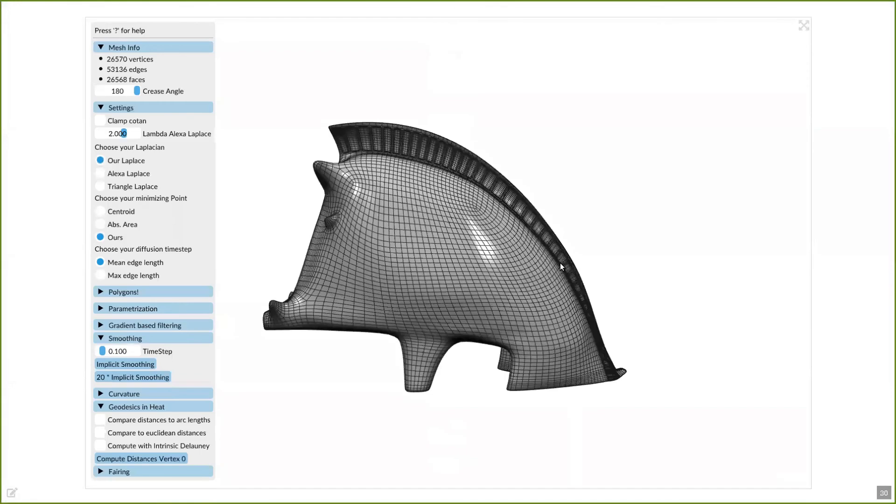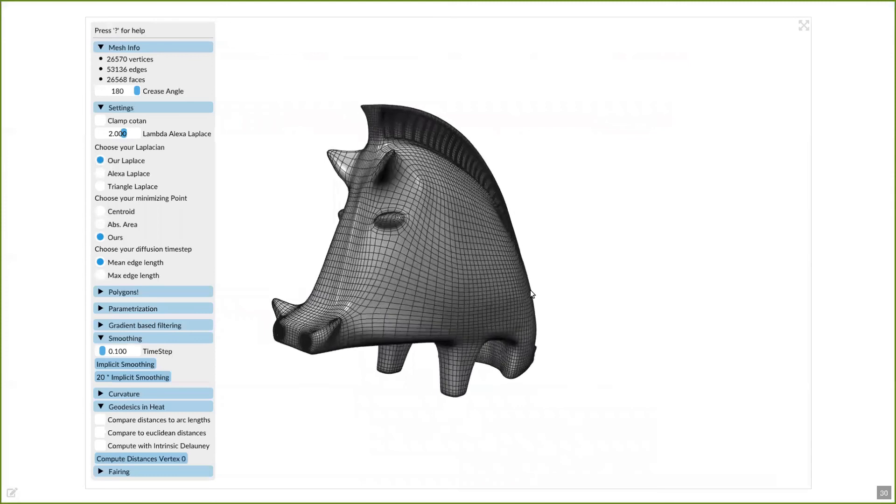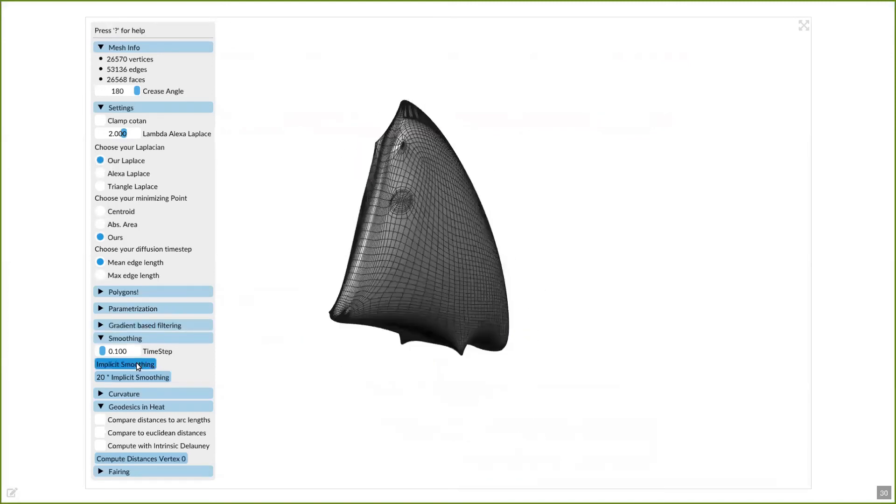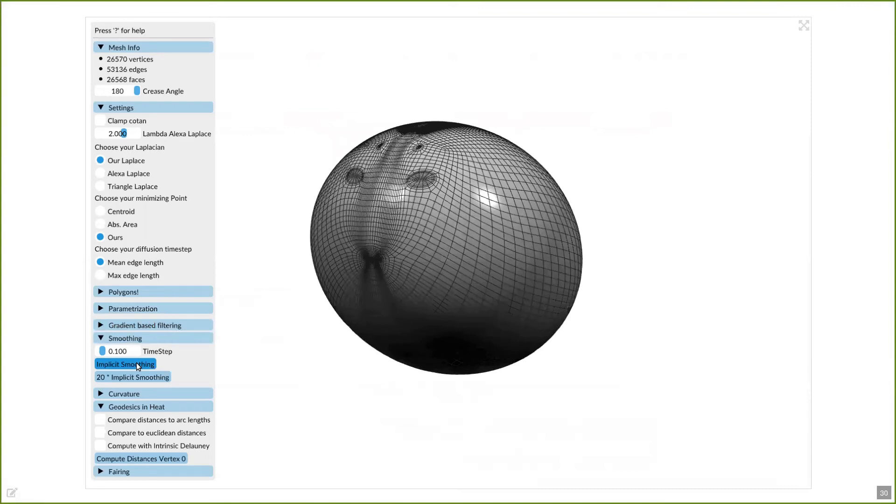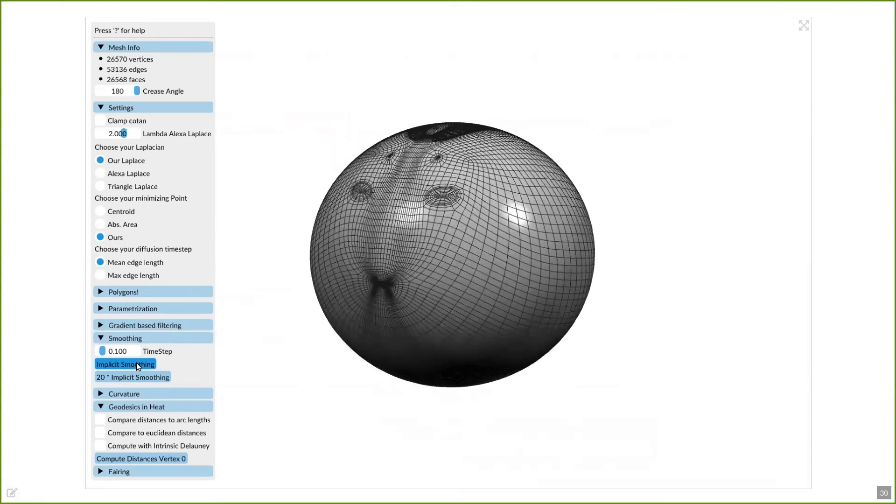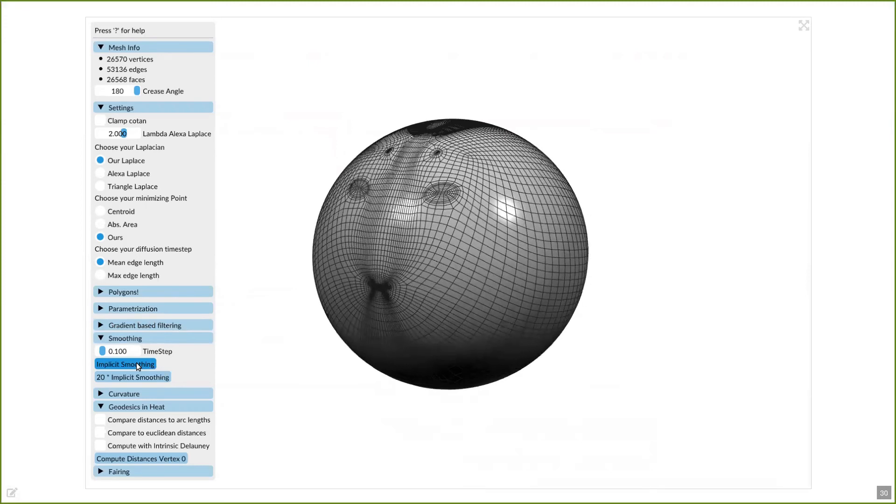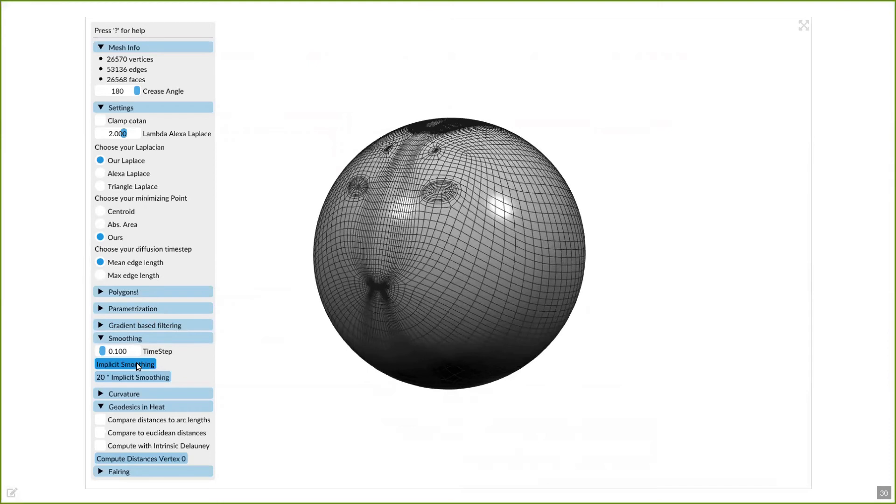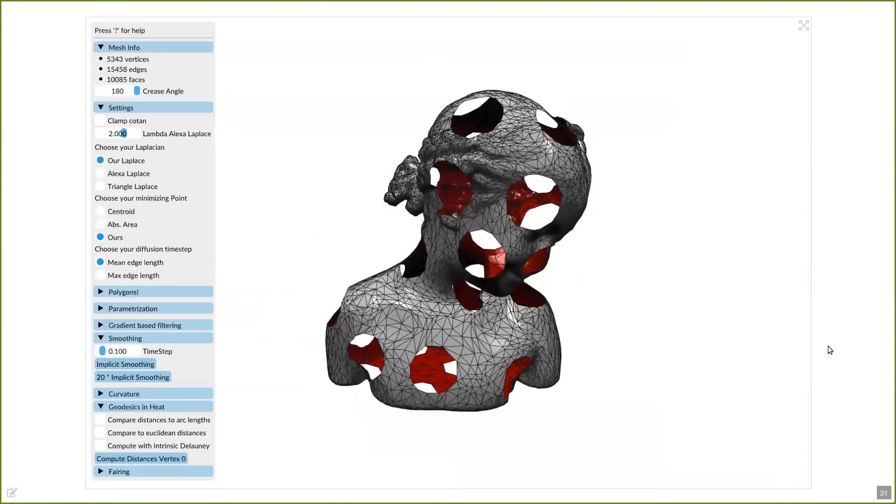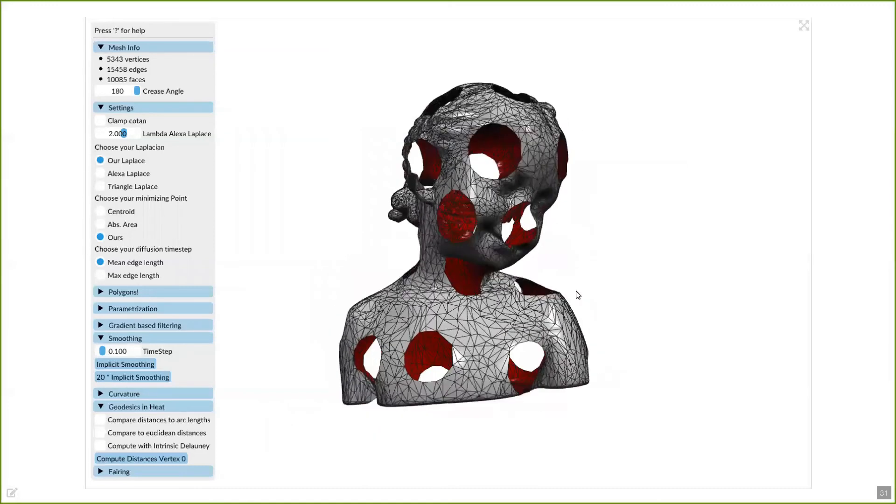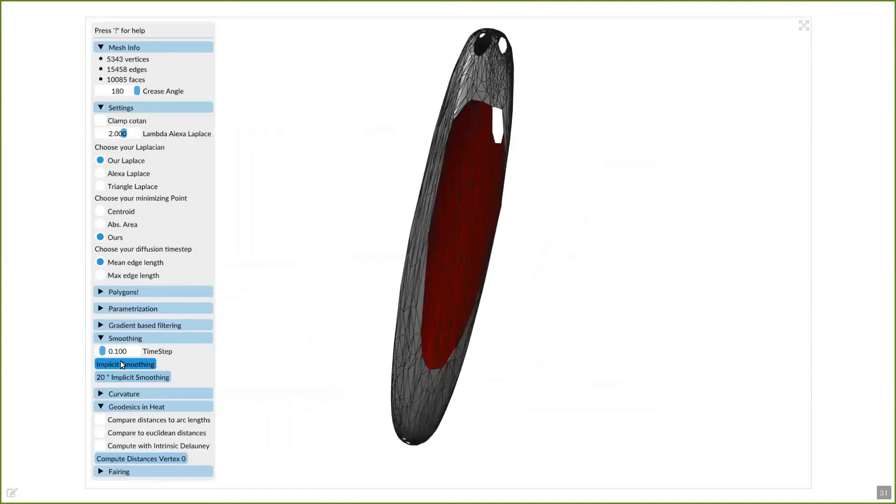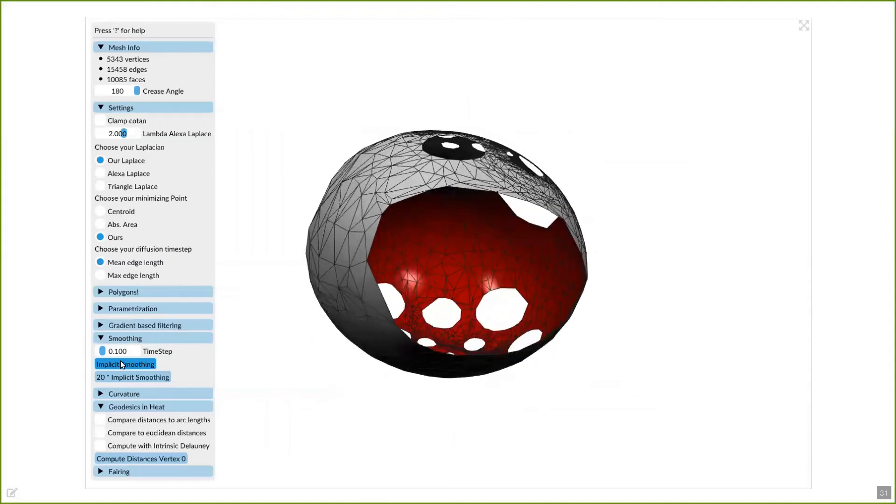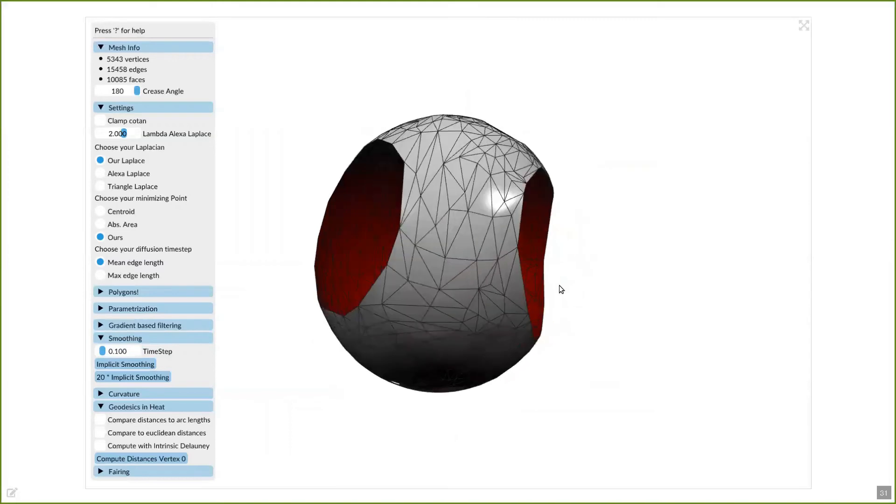For our first example, we implemented the conformalized mean curvature flow by Keenan Crane, and as you can see, the goal of this method is to transform the mesh into a more and more spherical shape through smoothing, and it is clearly working well for our operator as it obtains a more and more spherical shape with each iteration. Another nice application for our operator is that we are able to interpret meshes with holes as simply having large polygons, as you can see here. With this, we are able to apply geometric processing algorithms as if on a closed surface and do not have to worry about any boundary conditions. And once again, you can see that after some iterations, this mesh also converges to a spherical shape.